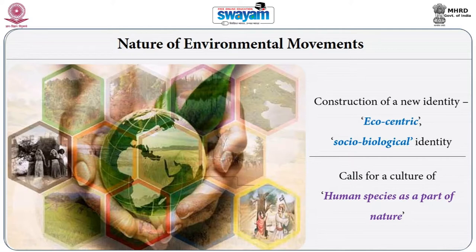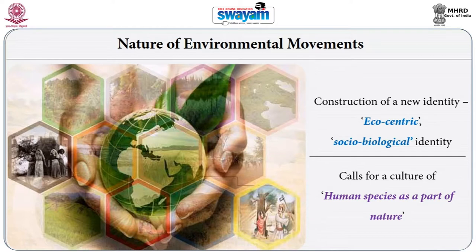Ideologically, what these movements talk about is an ecocentric egalitarianism where different elements of the ecosystem have equal rights over it. Humans should not claim a superior right over the ecosystem. Perhaps the greatest contribution of these environmental movements is the production of an identity — ecocentric egalitarianism — which produces a socio-biological identity where human beings are part of the larger ecosystem.